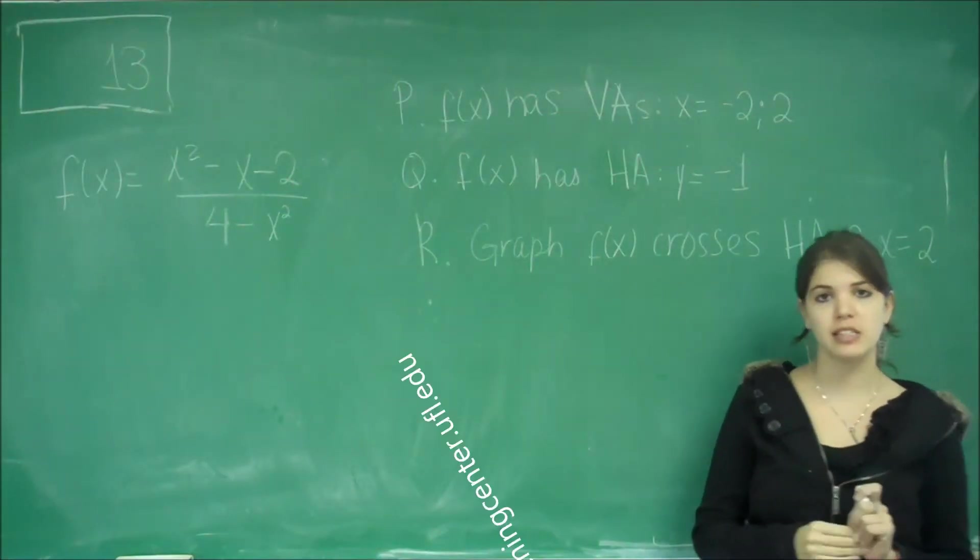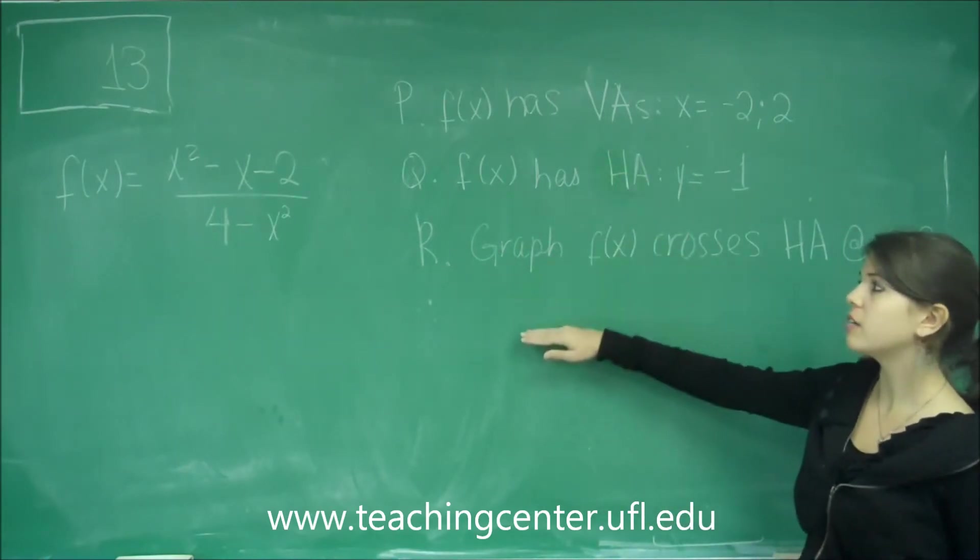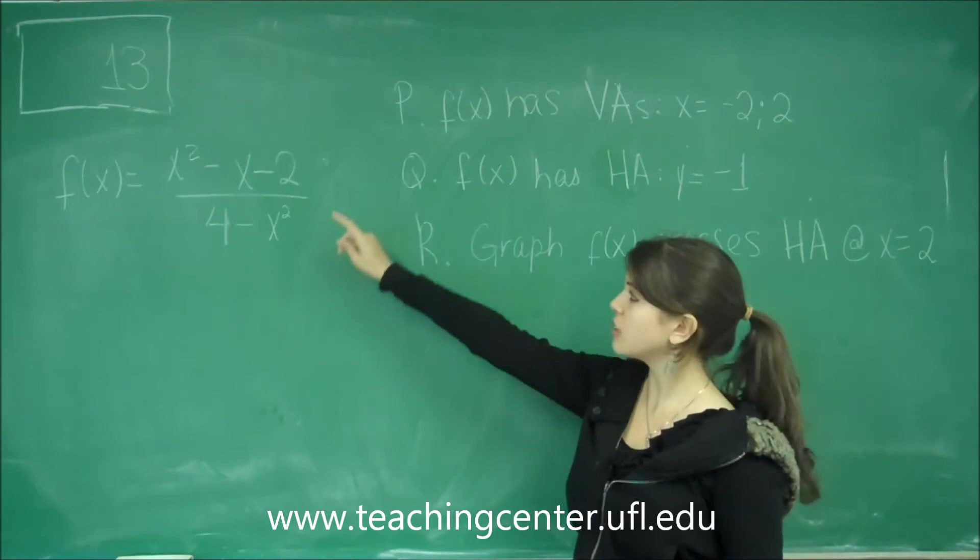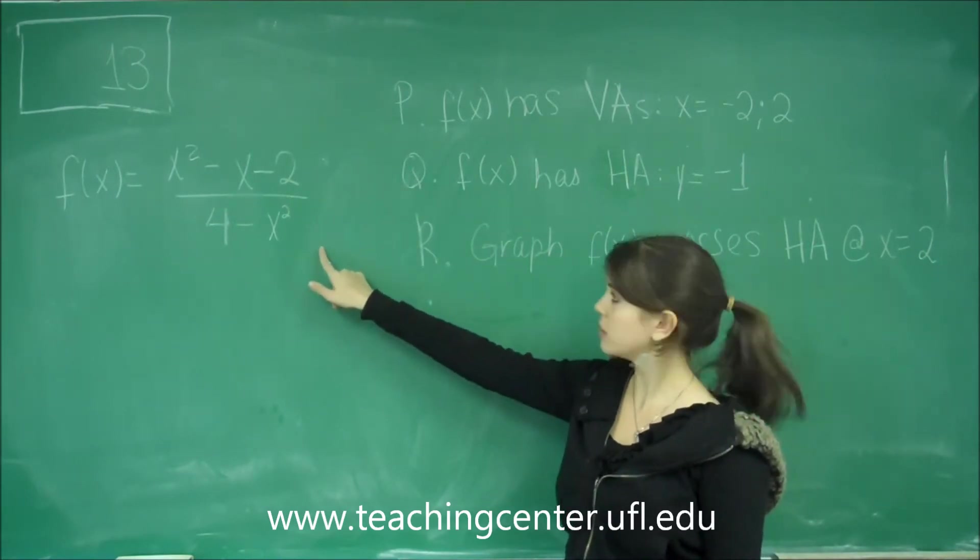This is question number 13 on the free response. It says which of the following are correct for the function f of x equals x squared minus x minus 2 over 4 minus x squared.